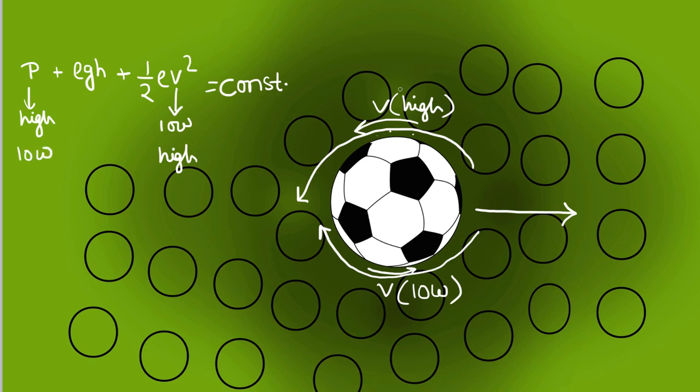And this pressure difference will cause a force on the ball from high pressure side to low pressure side. And this is why when anti-clockwise spin is given, the force acts to the left of the ball and the path bends. Thank you.